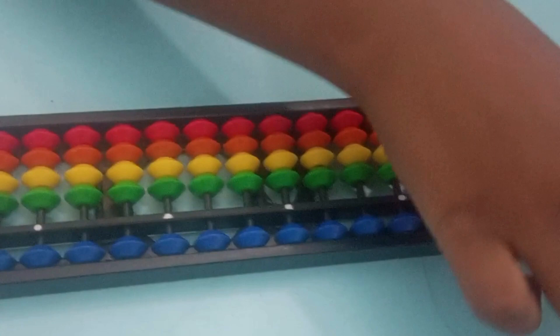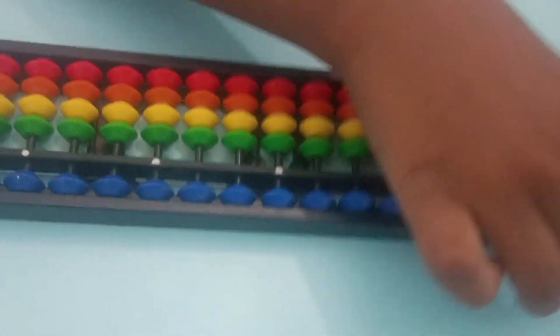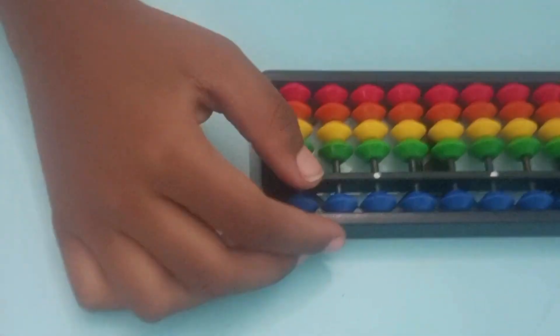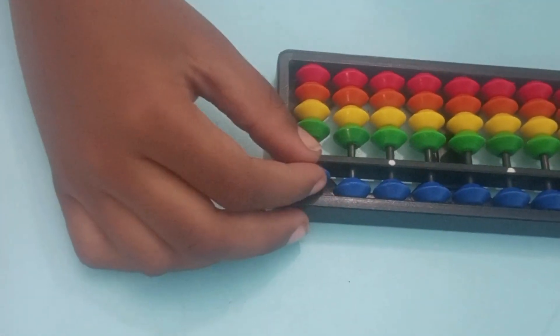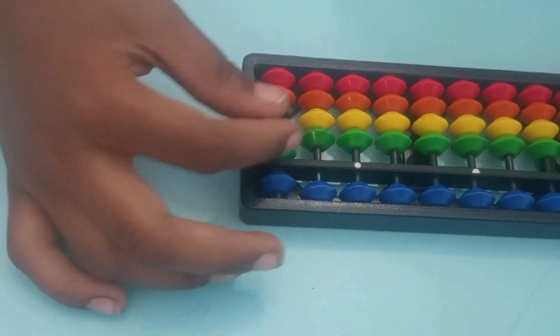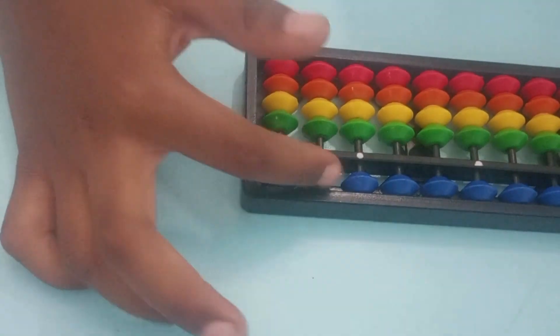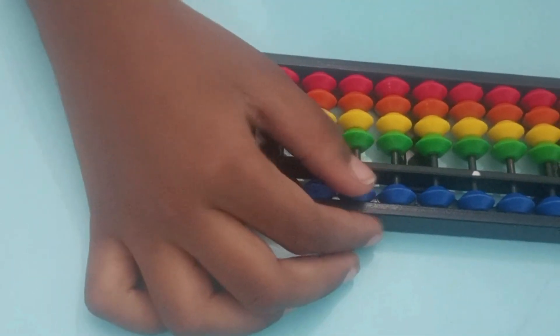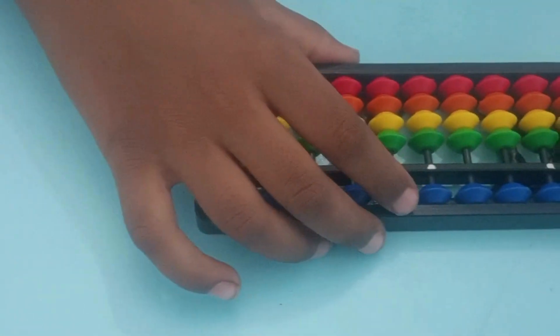This blue color is one million. No, no, this one from this corner. This one is five, next one is fifty, next one is five hundred, next one is five thousand. Okay.